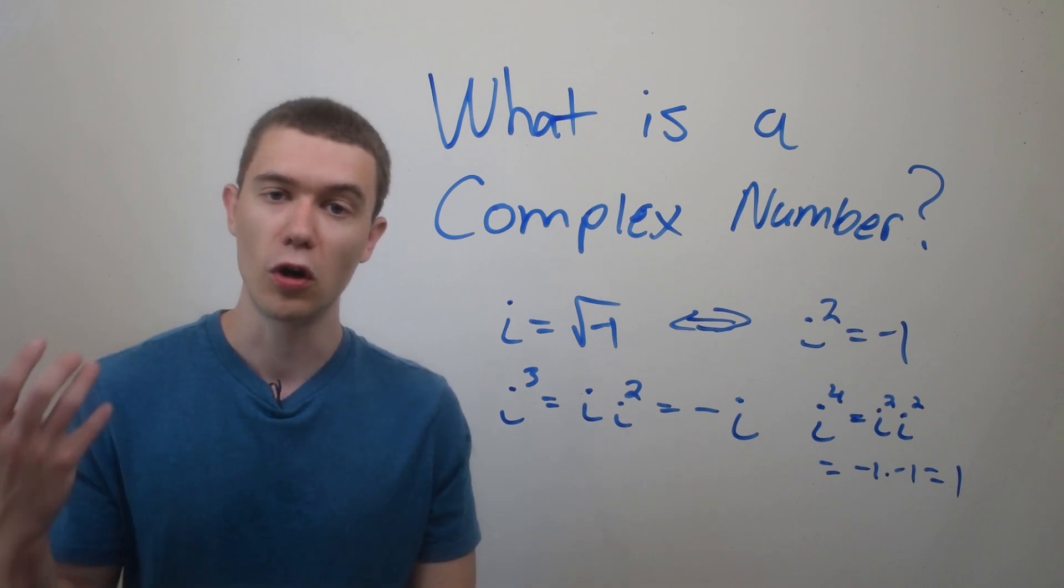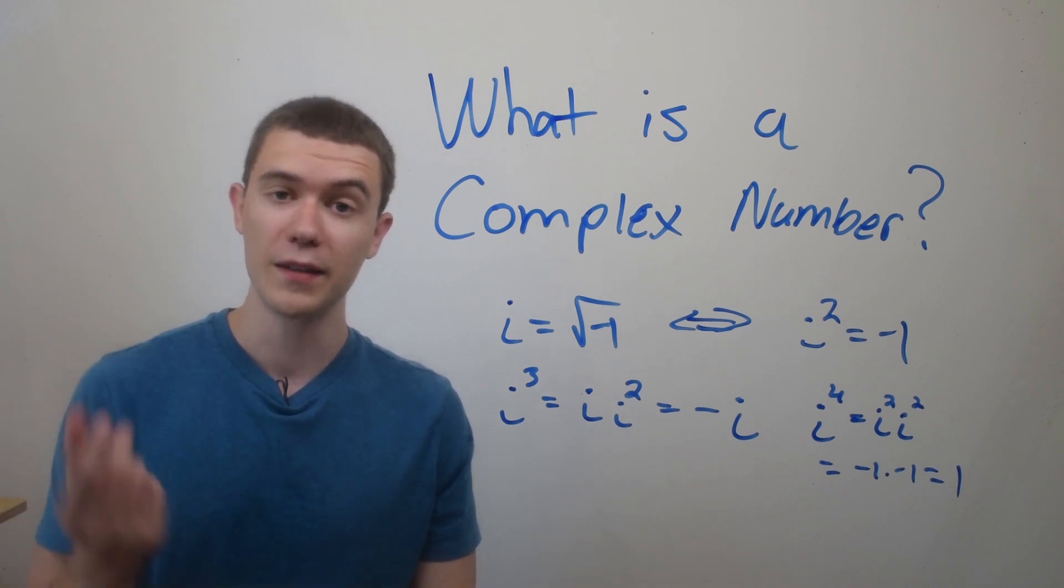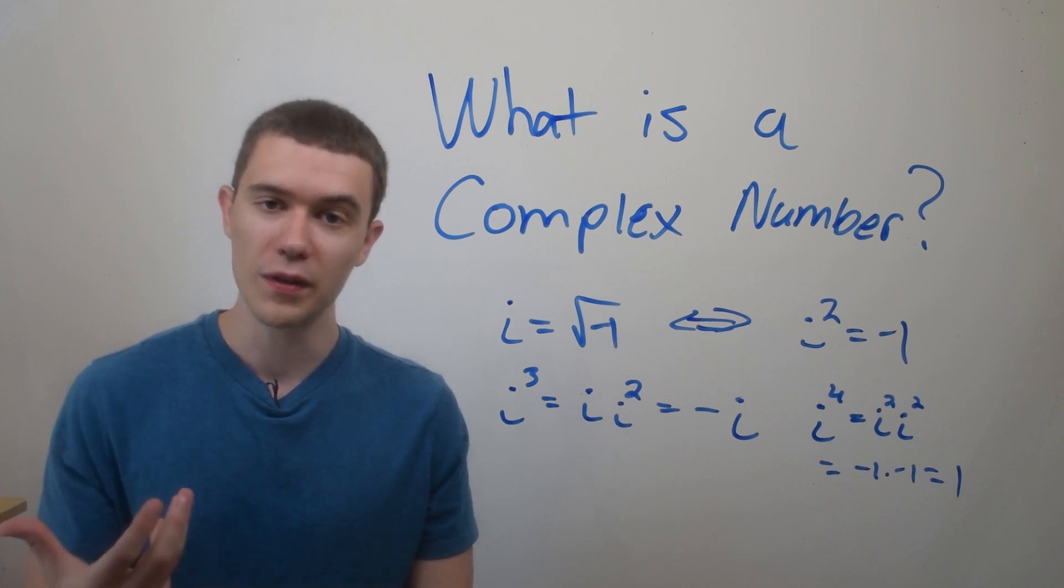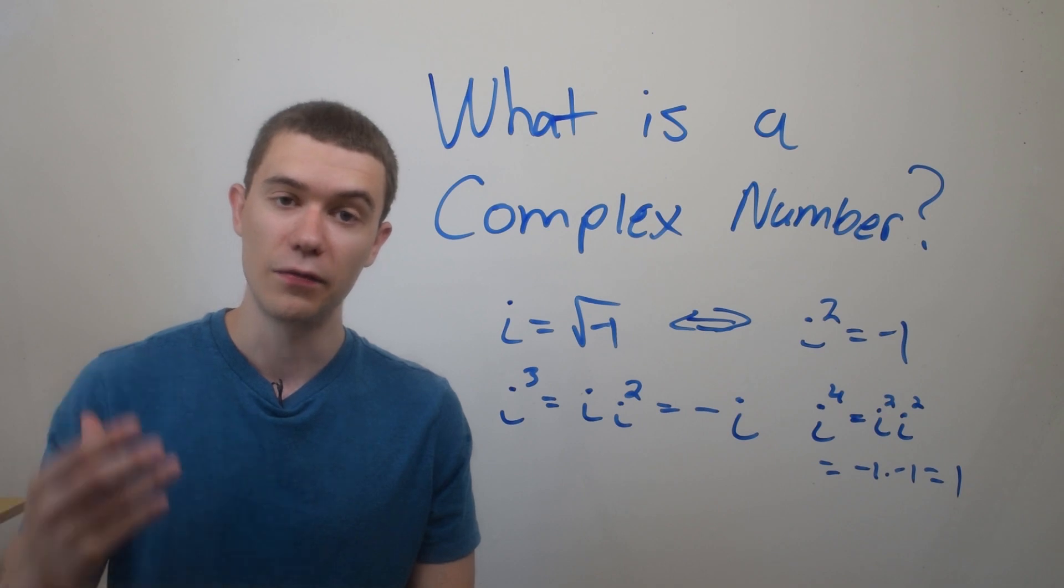So we have this recursive relationship where i is the square root of negative one, i squared is negative one, i cubed is negative i, and i to the fourth is one. This will repeat every four times.